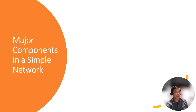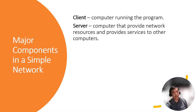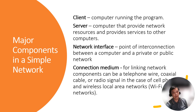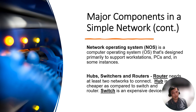Major components in a simple network: the client is a computer running a program. The server is the computer that provides network resources and services to other computers. Network interface is the point of interconnection between the computer and a private or public network. Connection medium for linking network components can be telephone wire, coaxial cable, or radio signal in the case of cell phones and wireless local area networks. The network operating system is a computer operating system designed primarily to support workstation PCs and, in some instances, traditional terminal PCs.